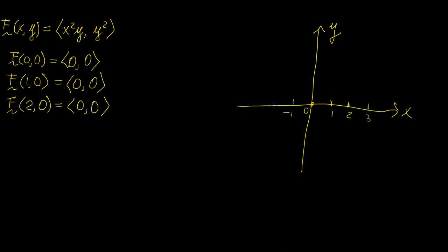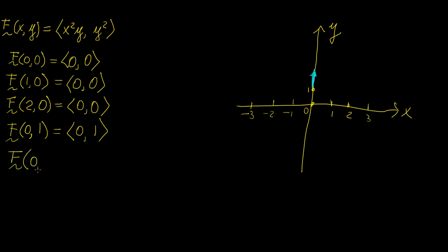Let's see what happens at (0, 1): the x-component is 0, and the y-component is 1 squared, which is 1. So we have a vector starting at (0,1) with unit length, extending to 2, pointing straight up. Now at (0, -1): something quite interesting happens — when you square -1 you get positive 1. So starting at -1, we have a vector of unit length also pointing upwards. That's a very interesting property of this vector field.